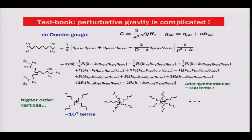You work out the Feynman rules. Here's the propagator, in particular in the de Donder gauge. It has three terms — not so bad — with the usual one over p-squared. But if you look at the higher order terms, they start to look bad. The cubic vertex doesn't look so bad, but this notation secretly hides various permutations and symmetrizations over the mu indices. After you work this out, you have on the order of 100 terms — actually closer to 200. And then there's a four-point interaction with on the order of 1000 terms, and so on — it gets worse and worse, and of course this never ends.